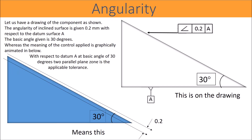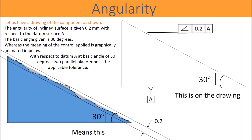Let us have a drawing of the part as shown. The angularity of the inclined surface is given 0.2 mm with respect to the datum surface A. The basic angle given is 30 degrees. The meaning of the control applied is graphically animated below — with respect to datum A, at the basic angle of 30 degrees, the applicable tolerance is a two parallel plane zone.